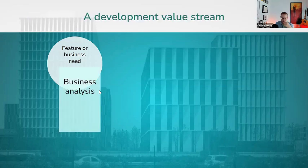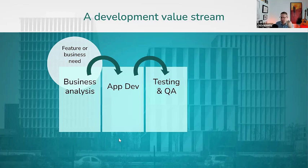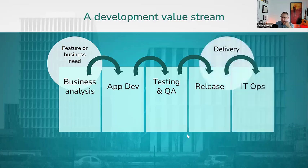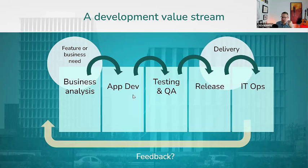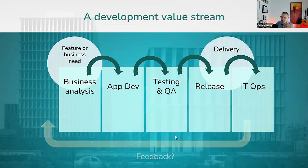To eliminate waste in your value stream, you have to be able to visualize it. This diagram shows a sample way of visualizing a development value stream — a very generic value stream in an organization. These could be departments, roles, or just things that need to be done to the work regardless of how teams are organized. Generally we start with the need, and we don't really have any value until there's delivery, because everything up to that point is overhead and sunk cost. We need to get to delivery, get things into the production environment, and then collect feedback that informs the front of the value stream.